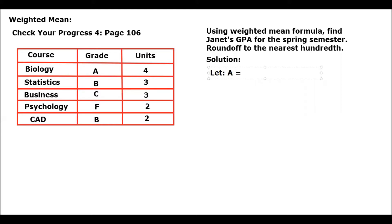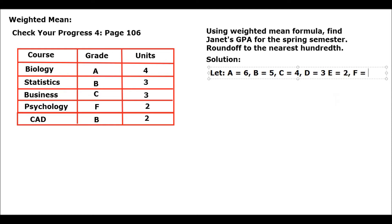For the solution, let the weighted values of the letter grades be: A equals 6 points, B equals 5 points, C equals 4 points, D equals 3 points, E equals 2 points, and F equals 1 point.